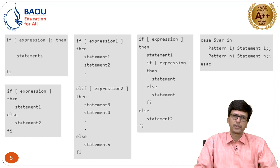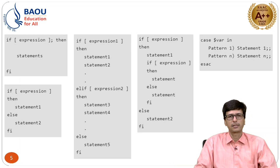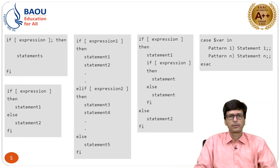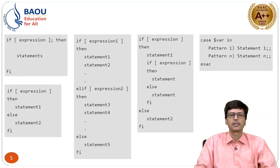If you do not want to use square brackets, another option is the test command. So instead of square brackets, you write test followed by the expression or condition. If you put then on a new line, the semicolon is not required, but if you require the then keyword on the same line, you need to put a semicolon. Then you write the statements to execute if the condition is satisfied, and the block ends with fi.